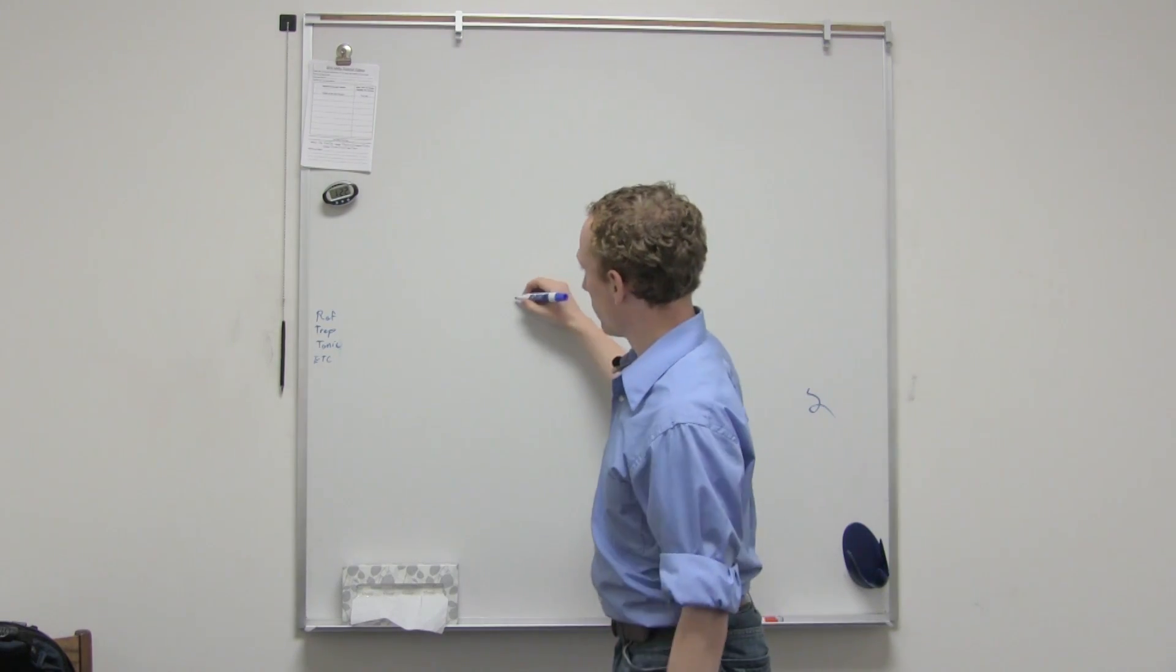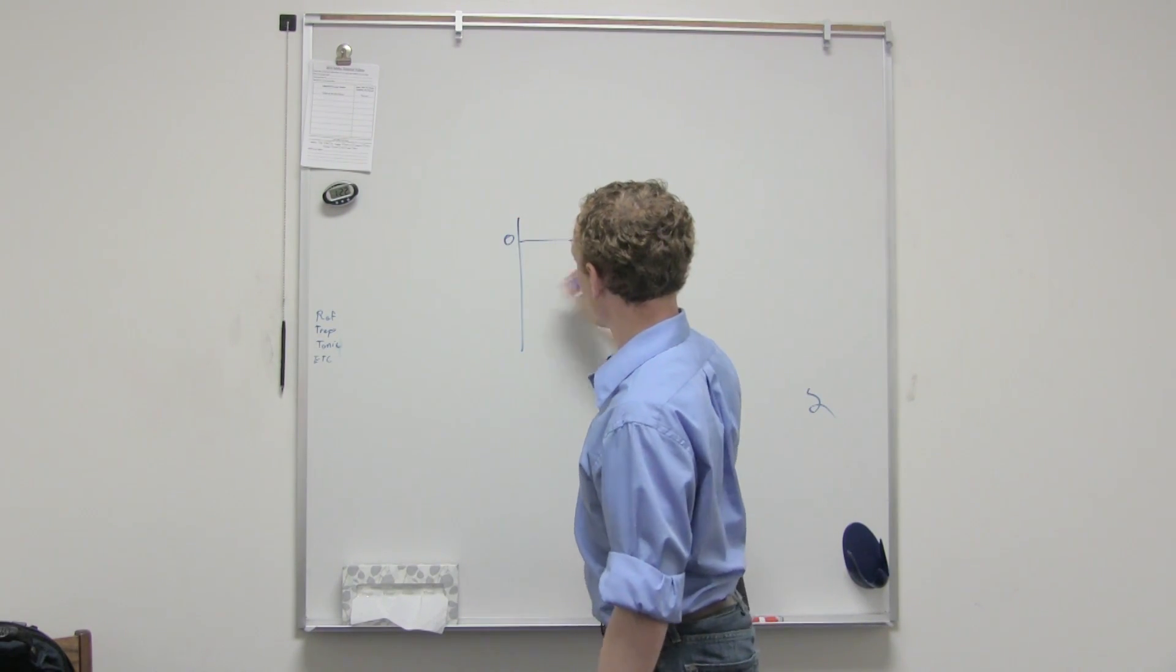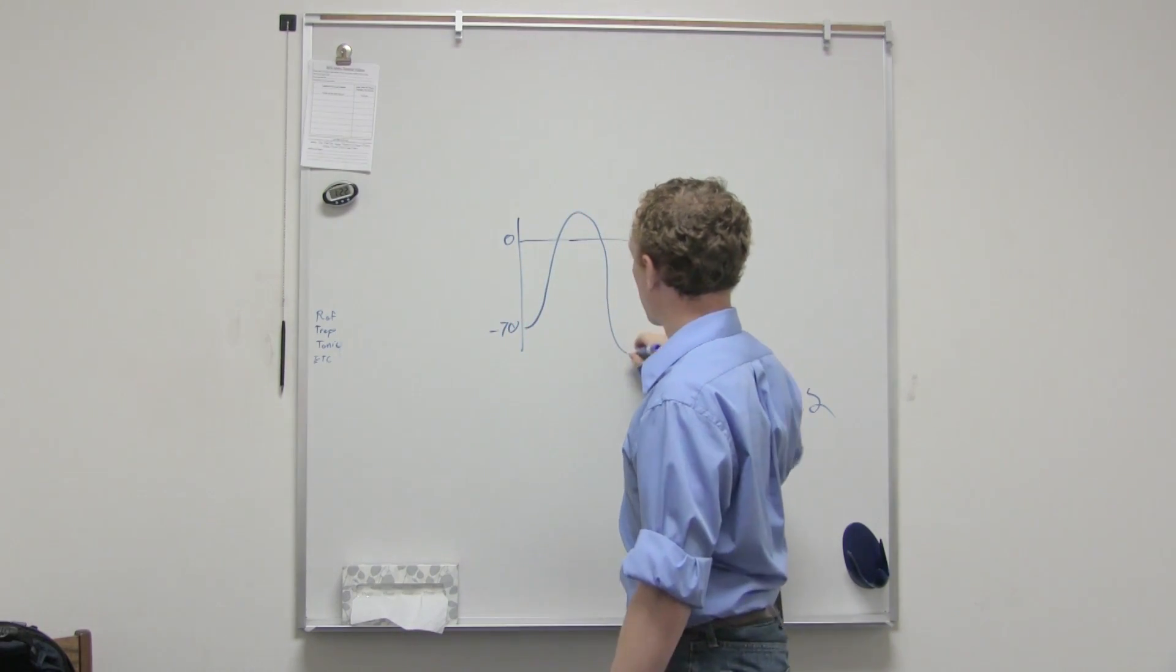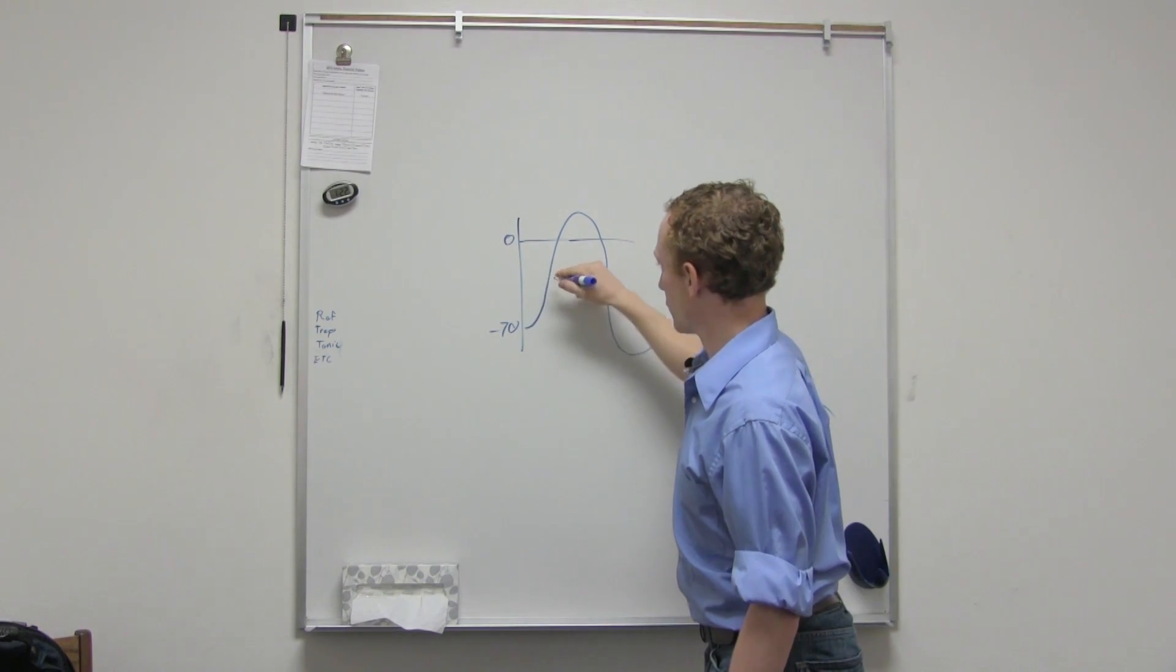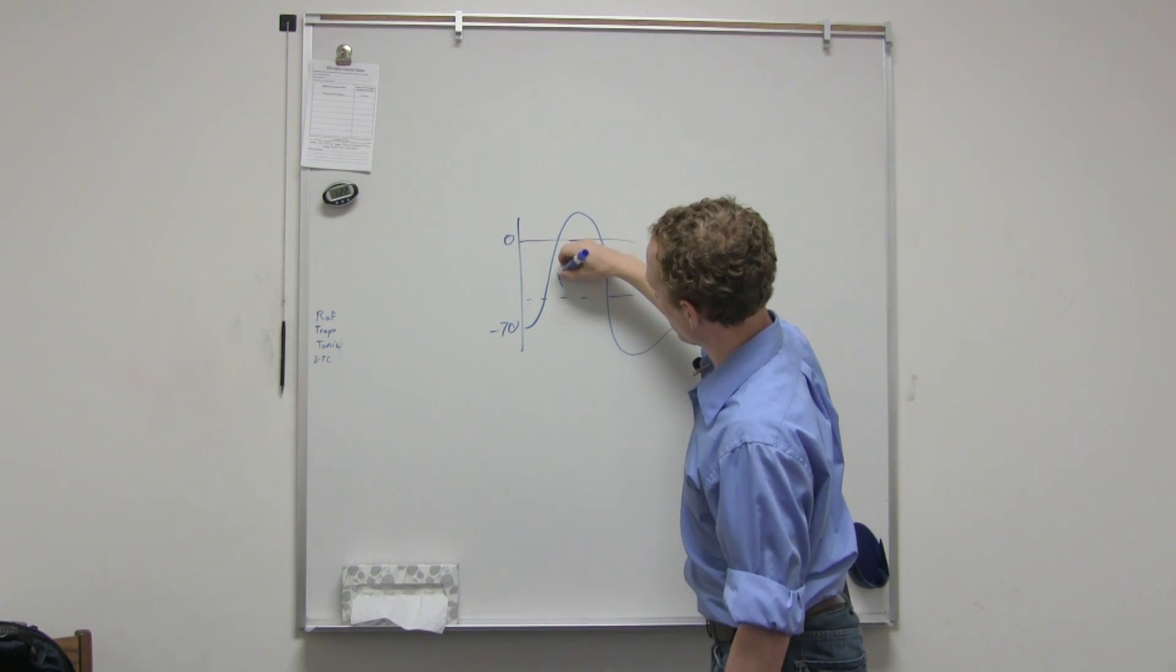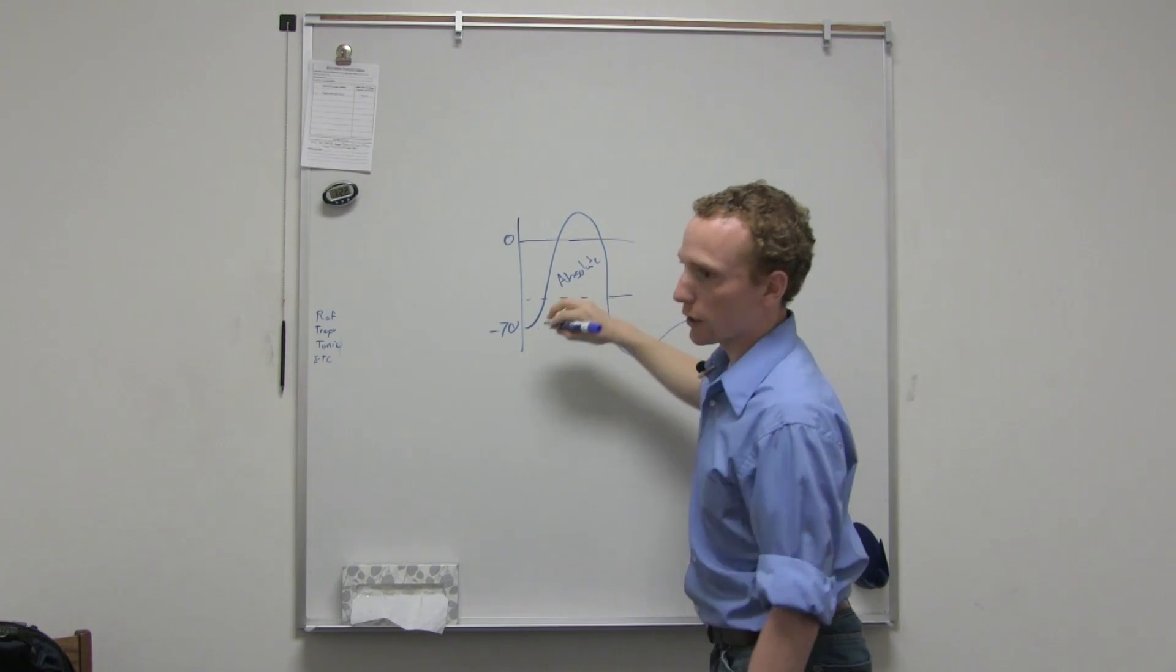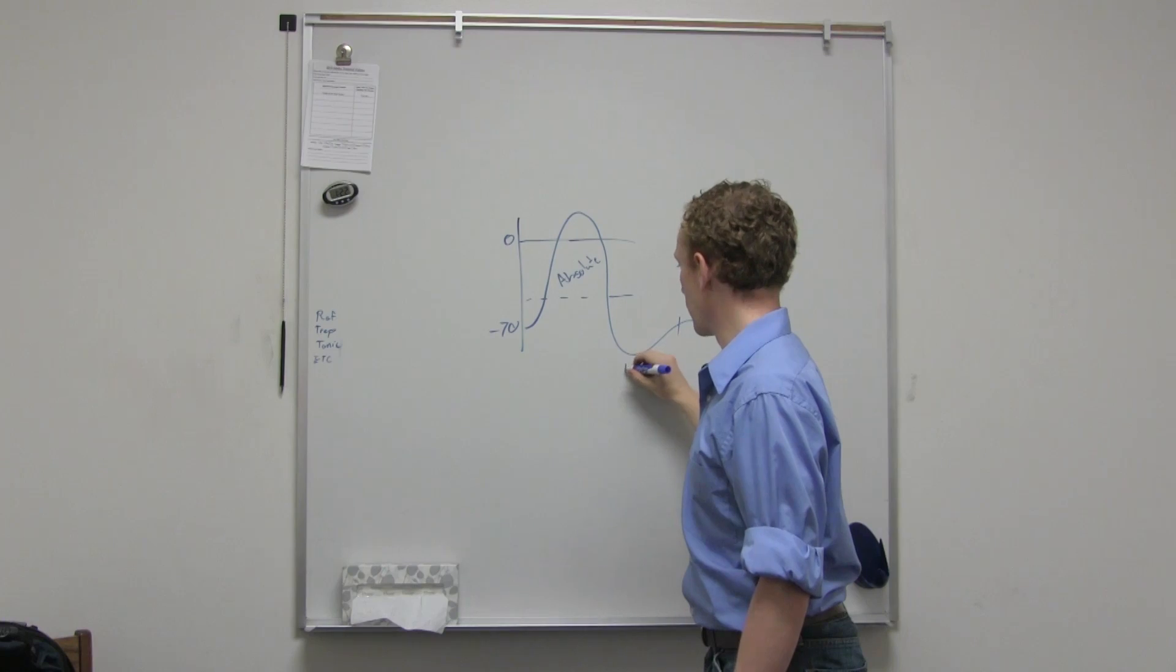Okay. So, general drawing of an action potential - when we're talking about the charge, I think it was -70 for a neural cell. Action potential, right? So here's the absolute refractory period. And until it's back to here, it's the relative.